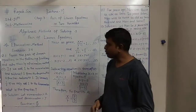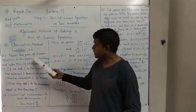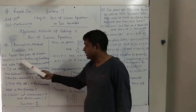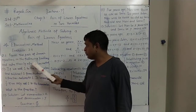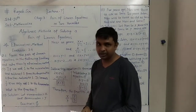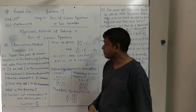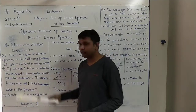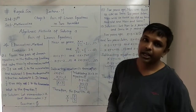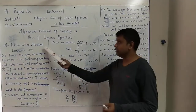We will see this method in Exercise 3.4. In Exercise 3.4, Question 2 is: form the pair of linear equations in the following problems and solve them by elimination method. First we have to make the pair of linear equations for each problem, and then solve them by the elimination method.